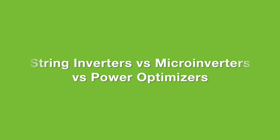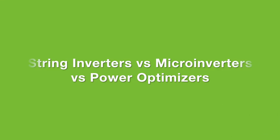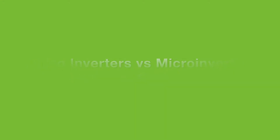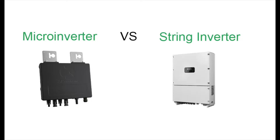Today we're going to talk about string inverters, micro inverters, and power optimizers. First, what is a power inverter? The simplest explanation is power inverters change the DC electricity into AC electricity that we use every day. There are two types of inverters used in a solar system: string inverters and micro inverters.